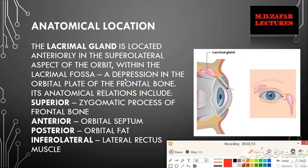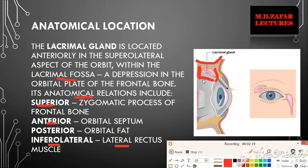Talking about the anatomical relationships: superior to the gland is the zygomatic process of the frontal bone; inferolaterally is the lateral rectus muscle; anterior to the lacrimal gland is the orbital septum; and posteriorly is the orbital fat.